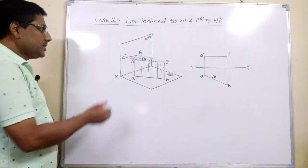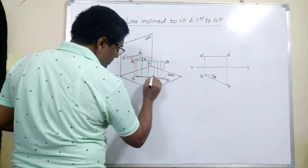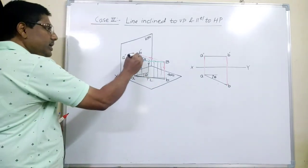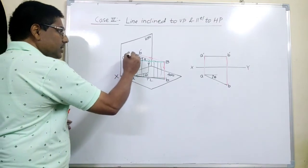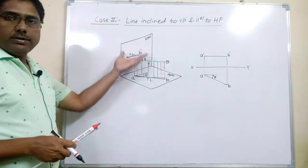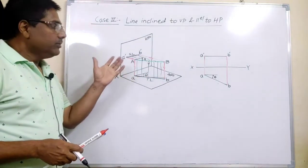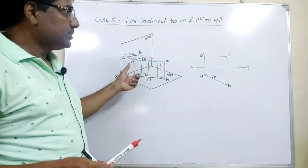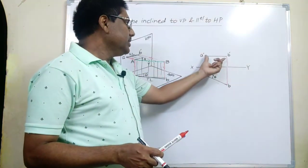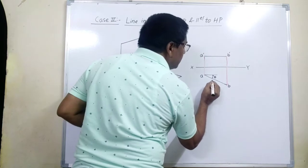These are the two views. Since the line is parallel to the horizontal plane, we get the true length in the top view along with the same angle. Whereas in the front view we get the reduced or short length, as the line is making a certain angle with the vertical plane. We have drawn this sketch in isometric view, but the orthographic views — front view a-dash b-dash and top view ab — show the inclination and true length on the 2D plane.